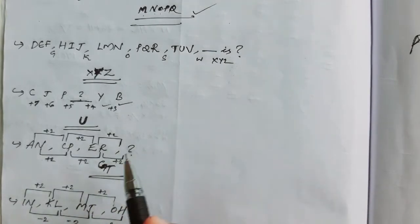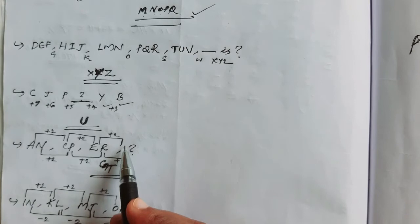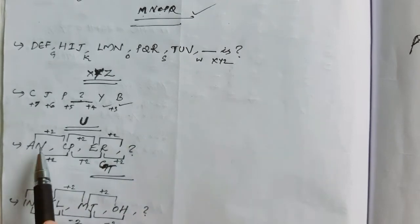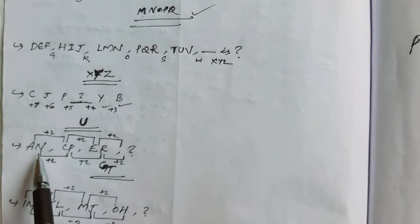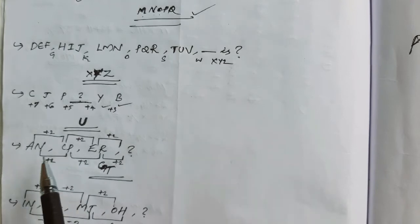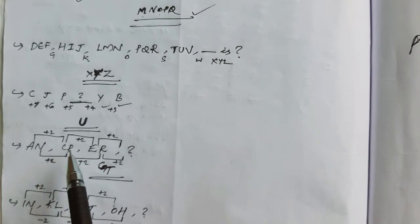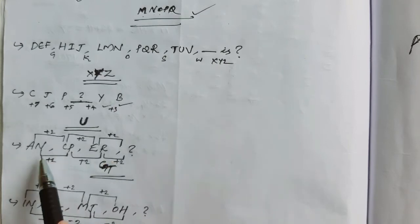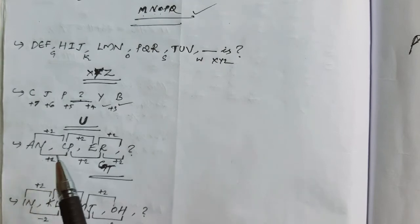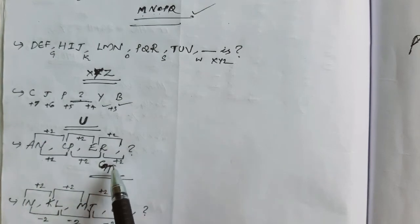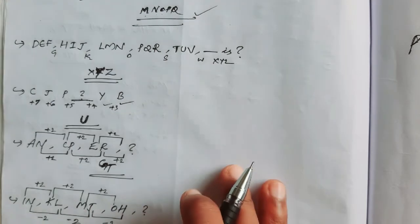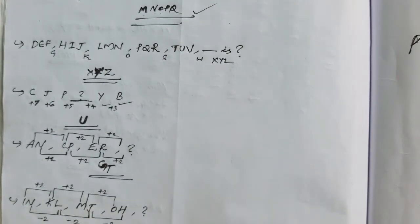This is FG, and G is the first letter of the next group. The second term follows the same plus 2 pattern. N and P: the difference is N, O, P — plus 2. Then P plus 2 is R, and R plus 2 is T. So the second term answer is ST — that is GT. Next question.